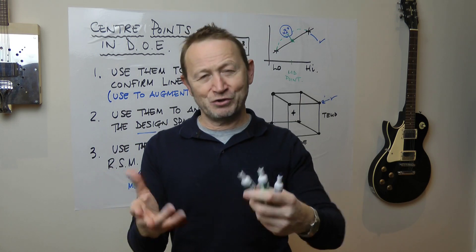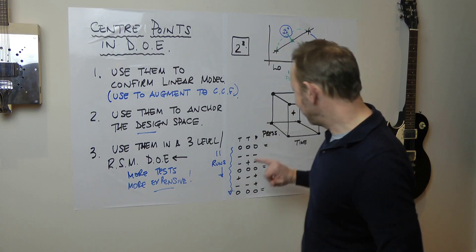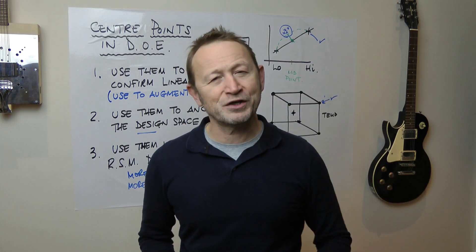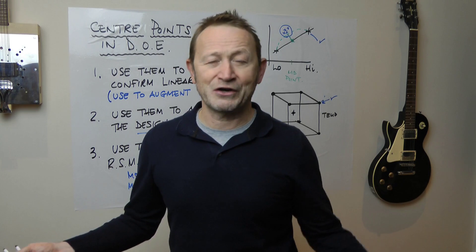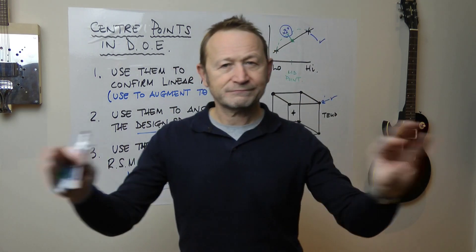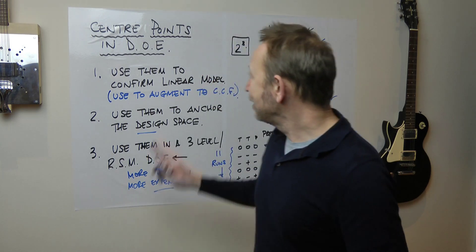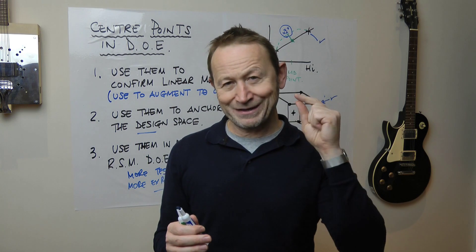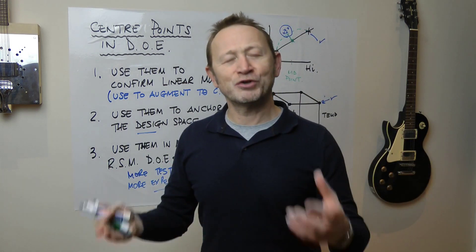When the software asks how many centre points do you want, people think this is about sample size — it's not. Typically I'd ask for three centre points: one at the beginning, one in the middle, one at the end. Previously I'd only ask for two when augmenting to build the central composite, but from now on I'll ask for three. There is the use of centre points in design of experiments: it helps to tell you that your design space is stable, and it tells you whether you have a linear or a curved model.